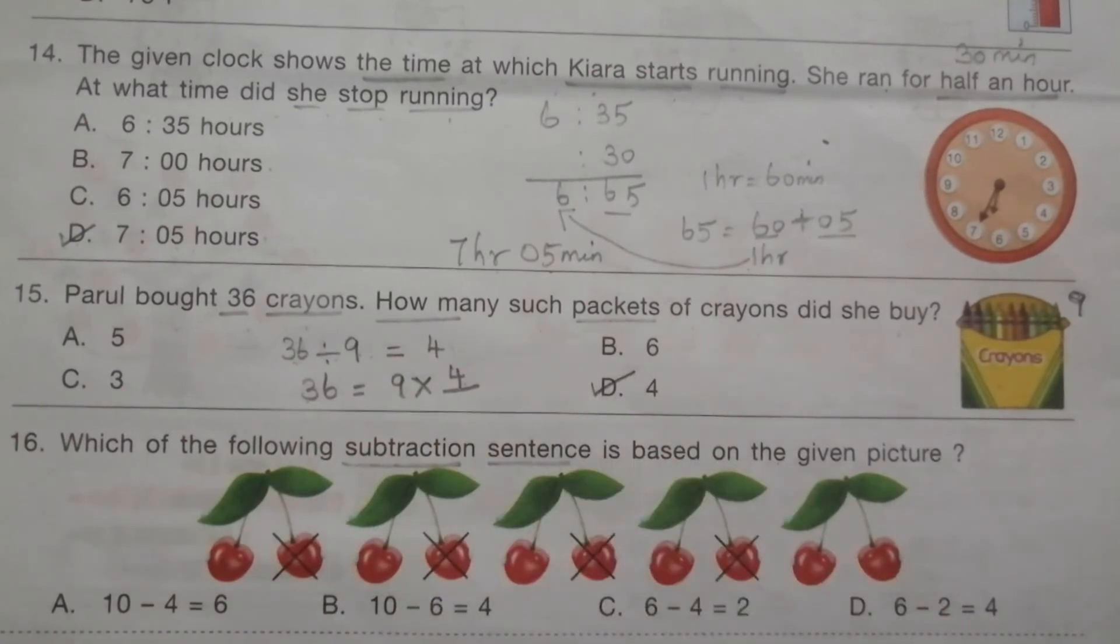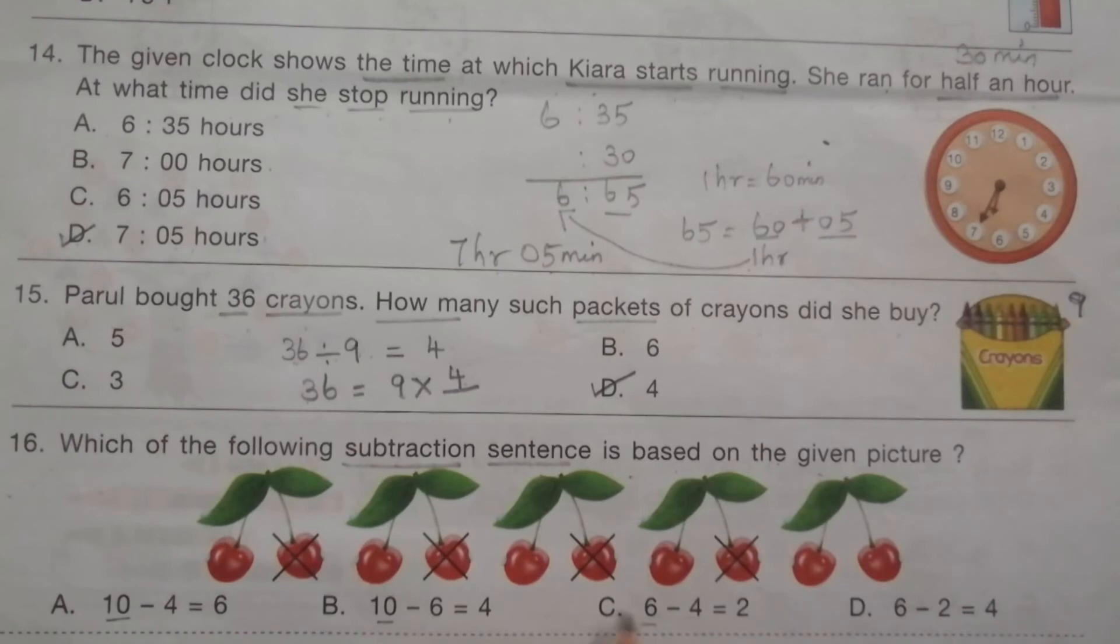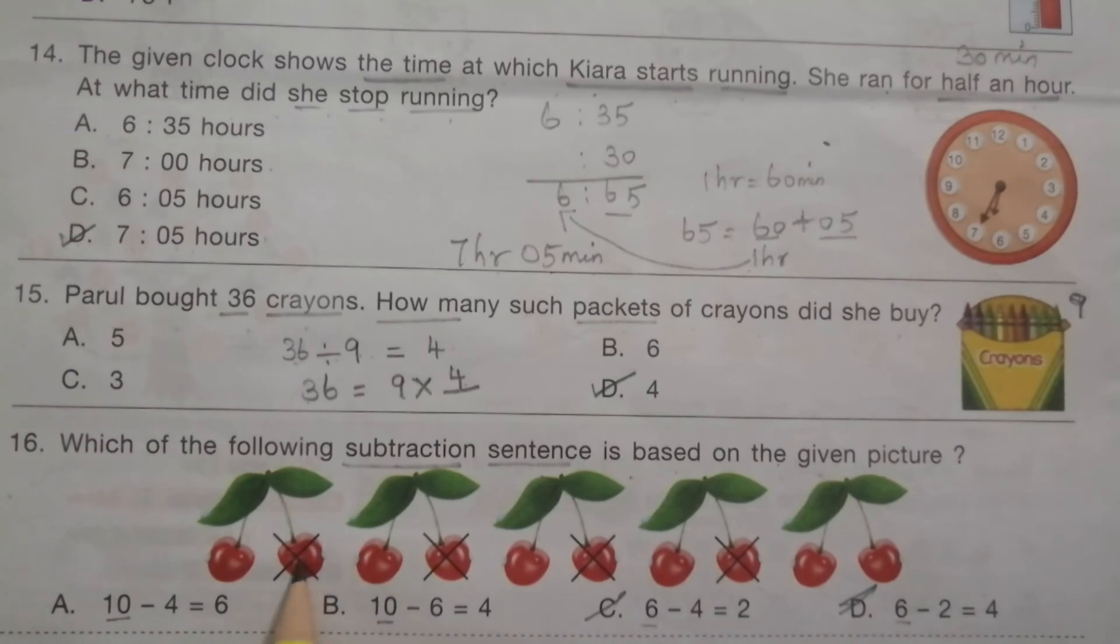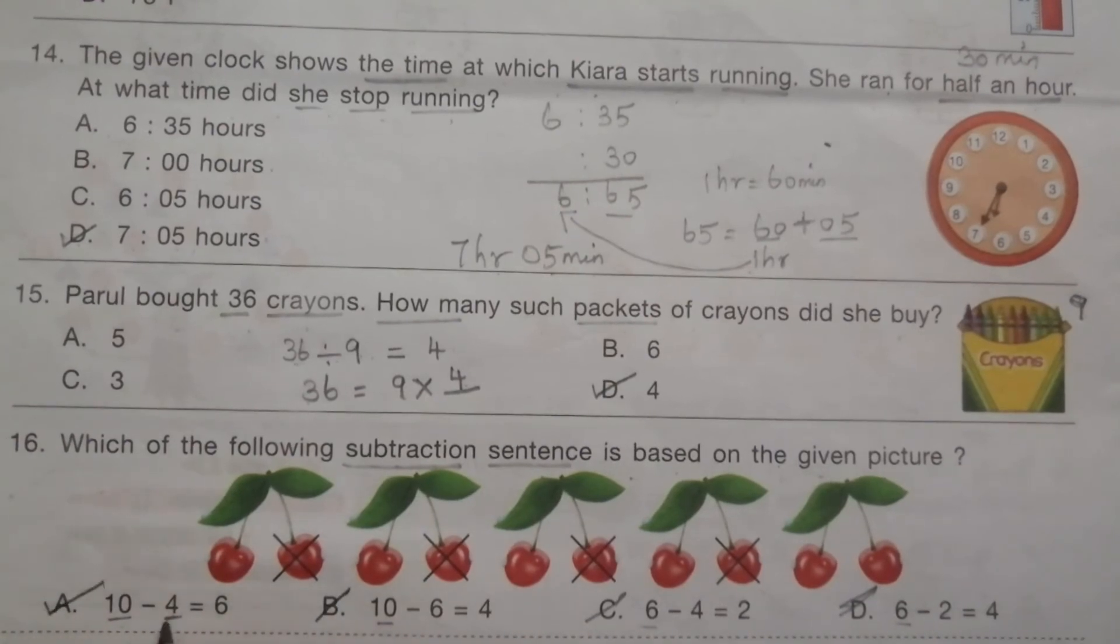Problem 16: Which subtraction sentence is based on the given picture? In this picture, the total number of cherries are 10. The crossed cherries are 4. So 10 minus 4. The answer is A: 10 minus 4 is 6. The remaining cherries are 6.